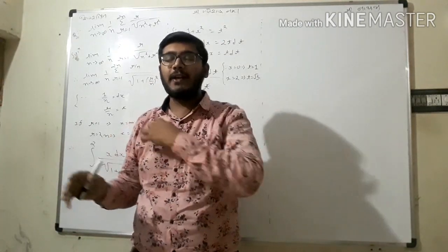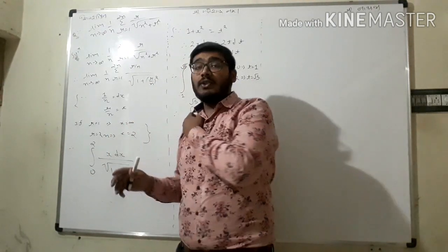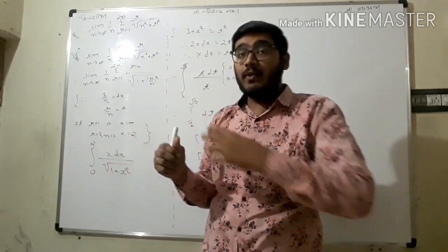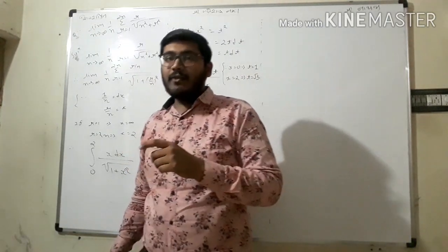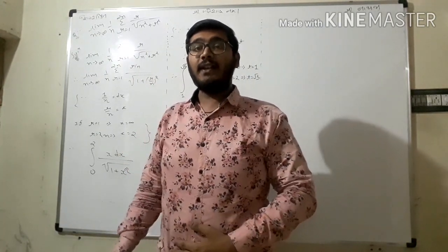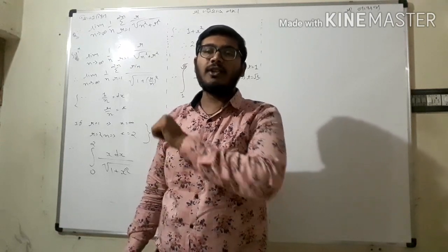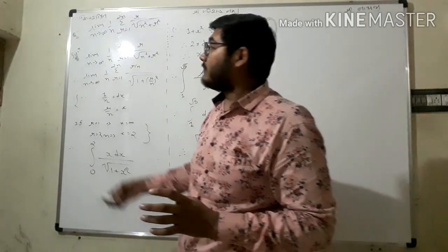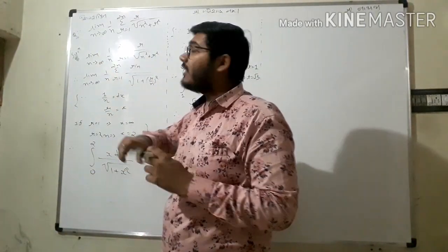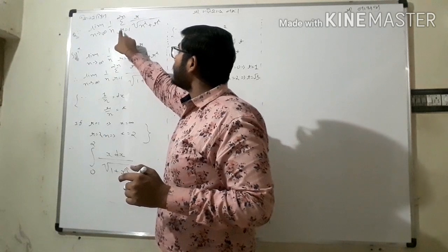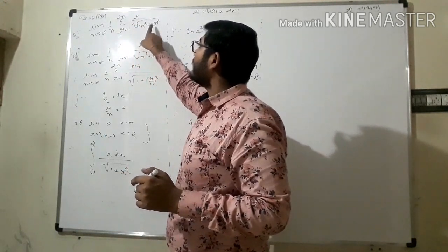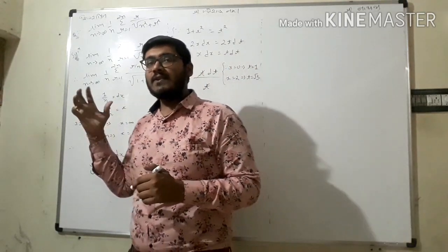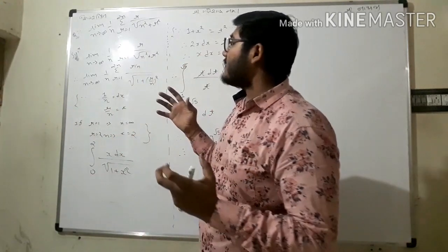This question is related to limits and derivatives, but here we can use integration. The question is: limit as n tends to infinity of one upon n, summation from r equal to one to two n, of r upon under root of n squared plus r squared. We have to find out this value.